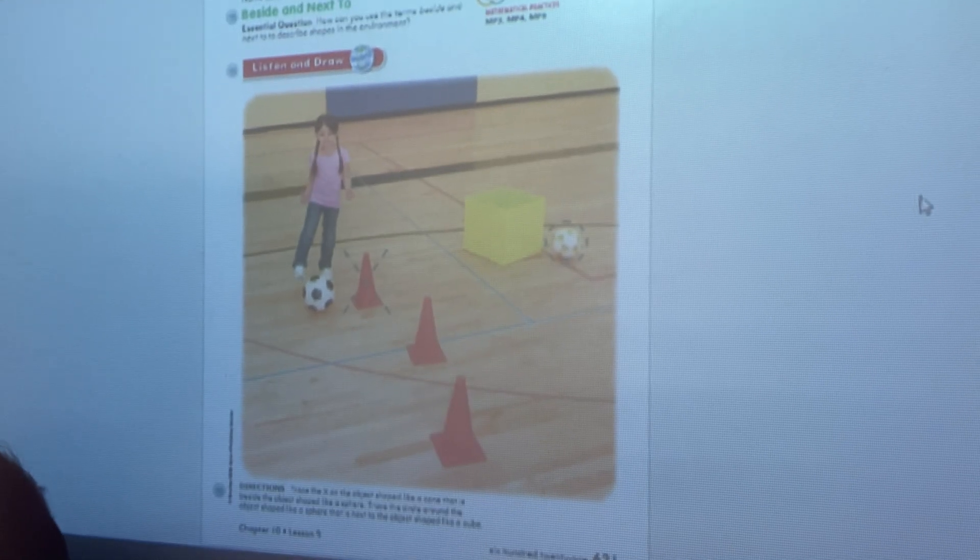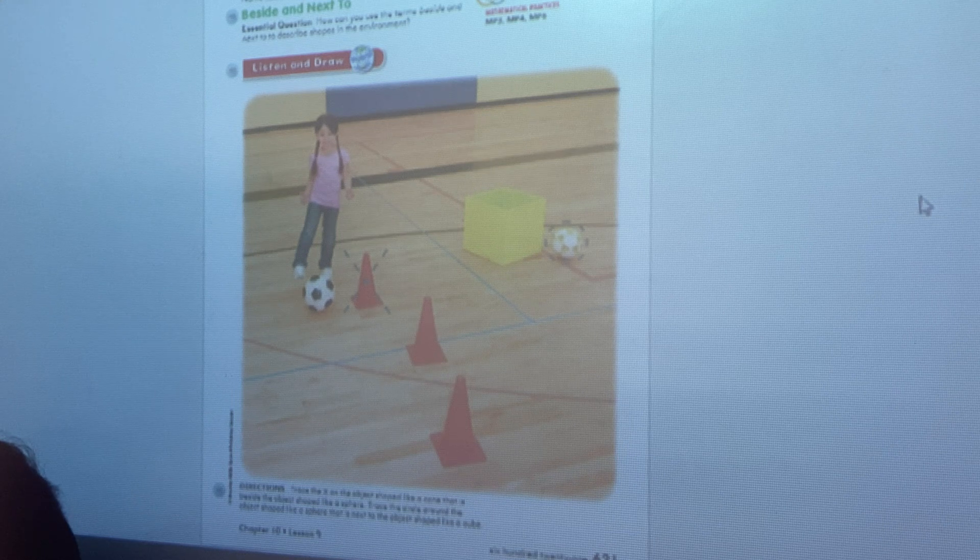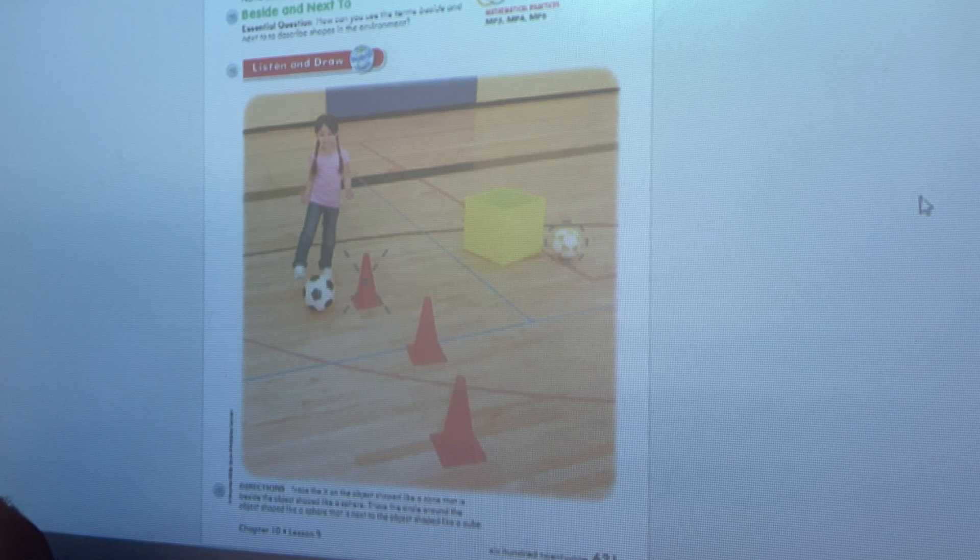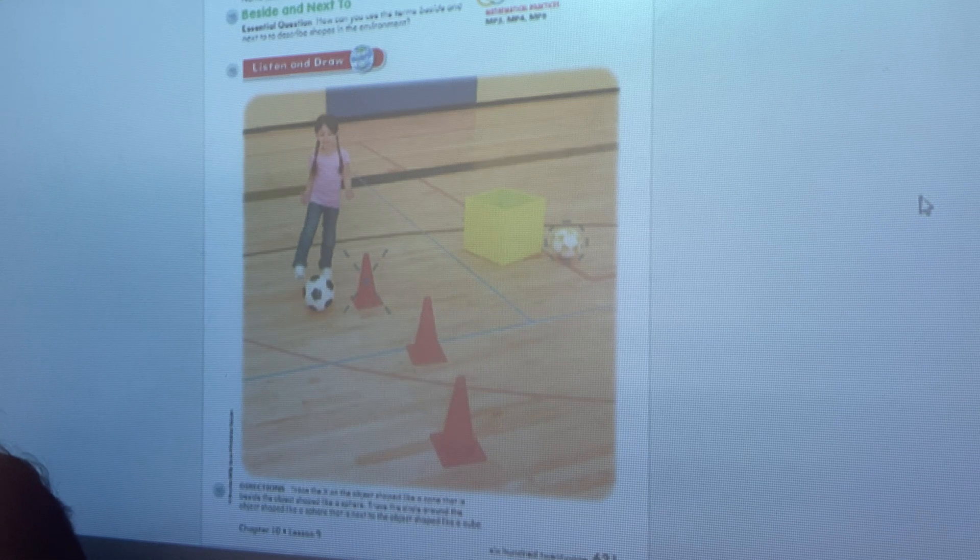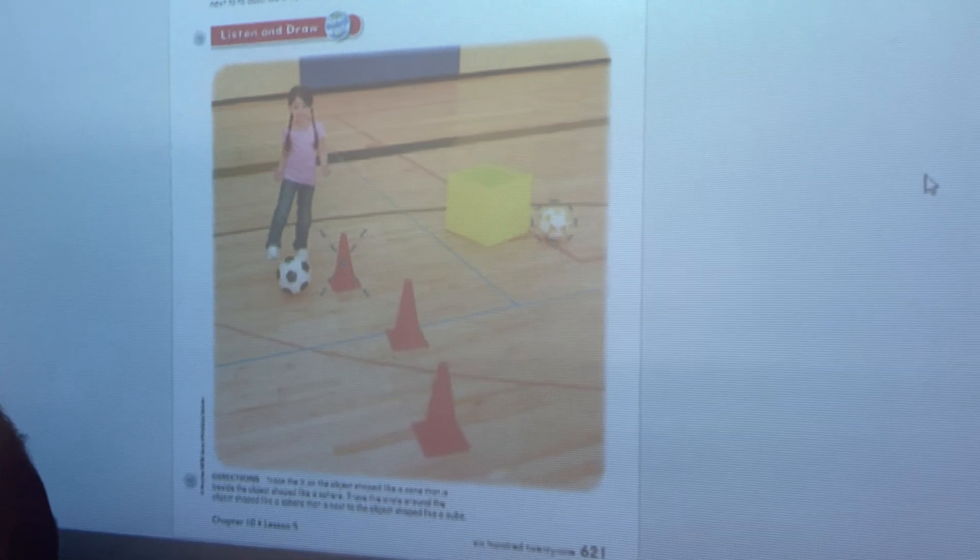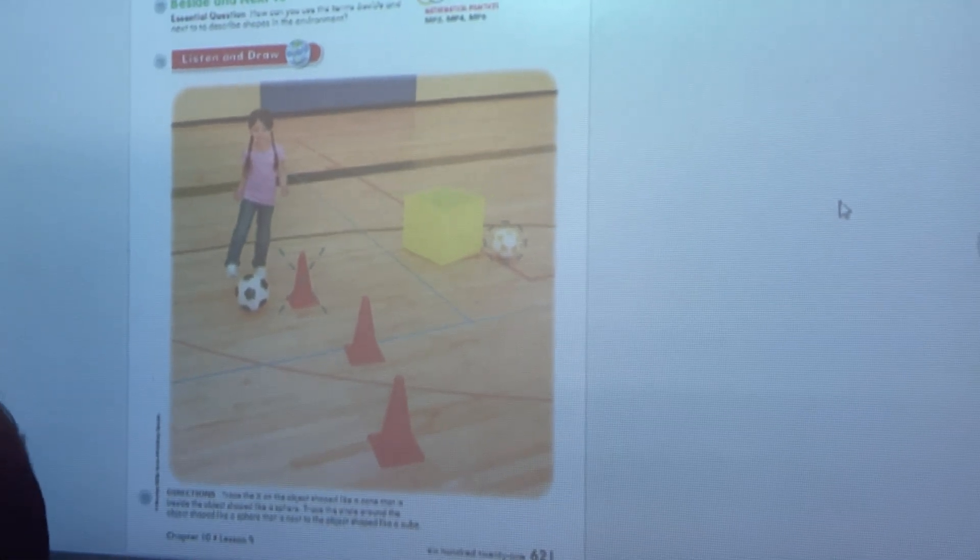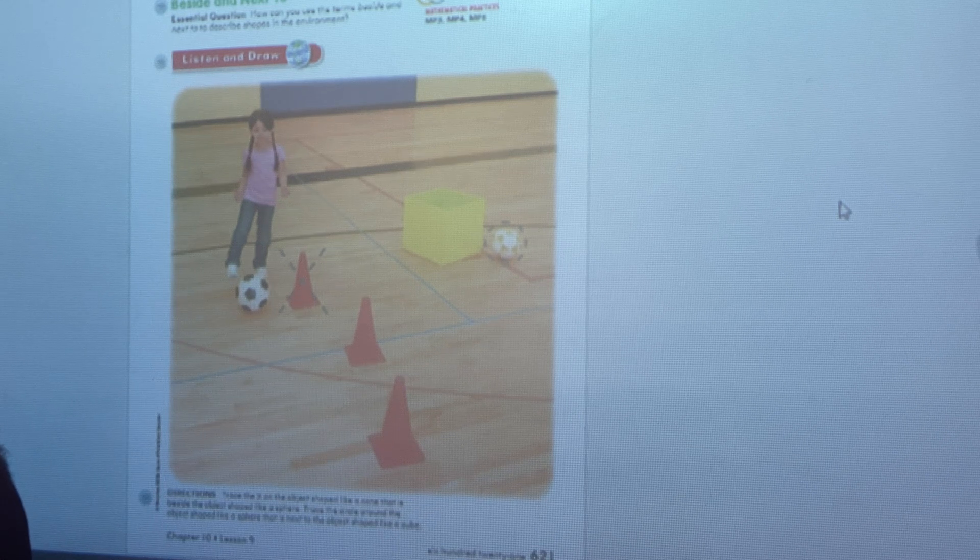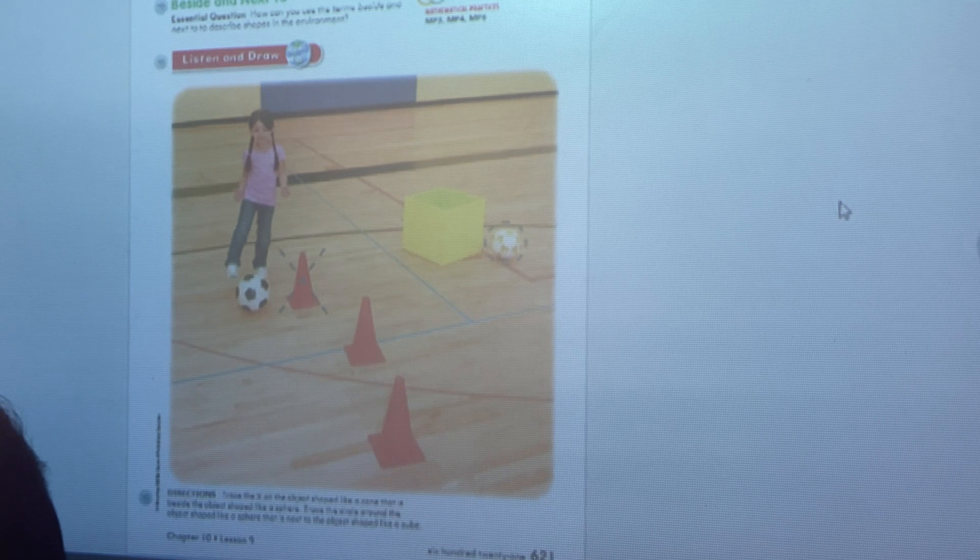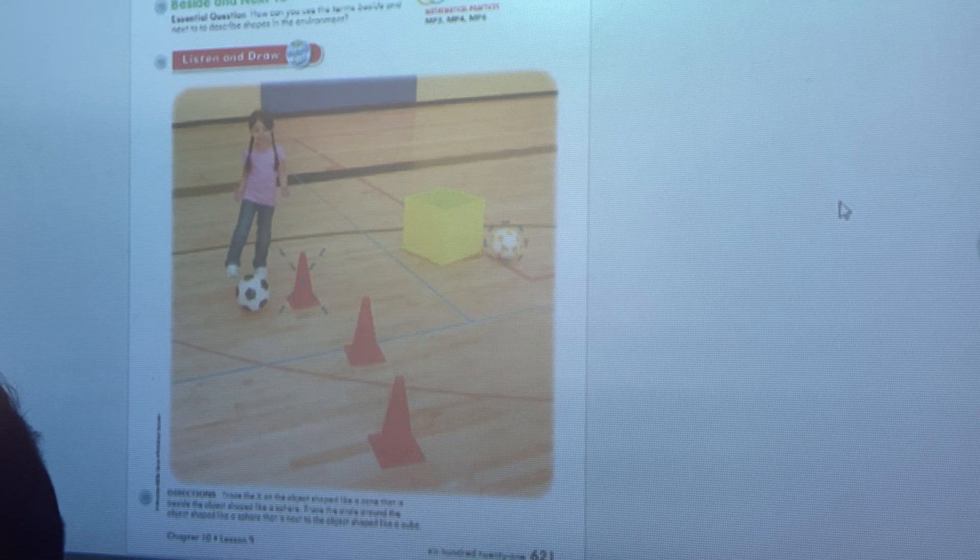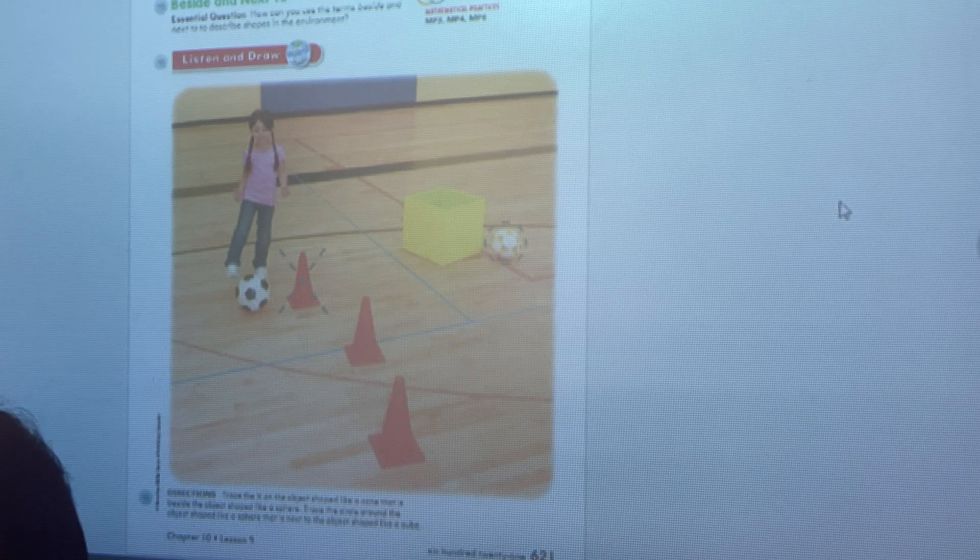In our last lesson, we talked about things that were above and below. Today, we're going to talk about things that are beside and next to. If you are sitting at a table, someone could be sitting next to you or beside you. Beside or next means it is in close proximity and right by you.